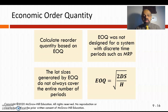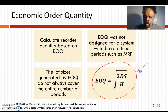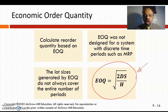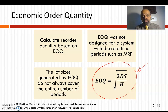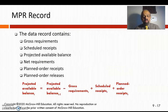EOQ is calculated using the formula: square root of (2DS / H). D is demand, S is setup or ordering cost, and H is holding cost. The economic order quantity gives you an efficient purchase quantity — sometimes buying the EOQ amount is better than buying the entire requirement at once. We need to think carefully about which strategy to use.